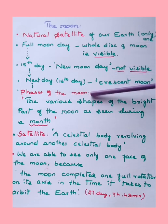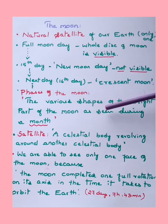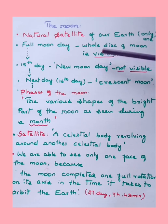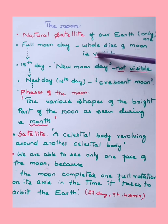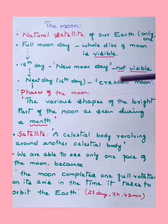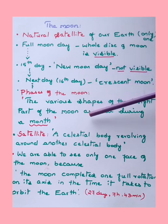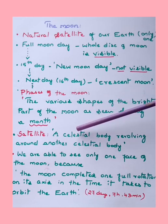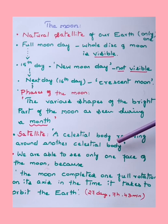The next day after new moon day, the 16th day, we see a slight moon just like a curve — that is called crescent moon. The various shapes of the bright part of the moon as seen during a month are called phases of the moon. This process is periodic: full moon, new moon, crescent, and back to full moon. A satellite is a celestial body revolving around another celestial body.